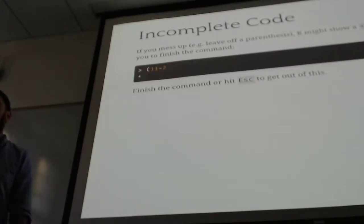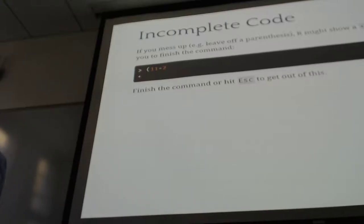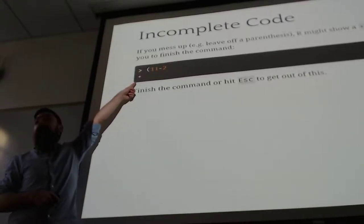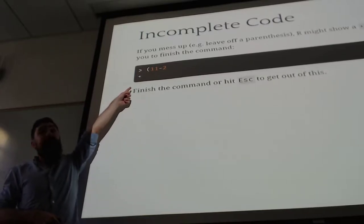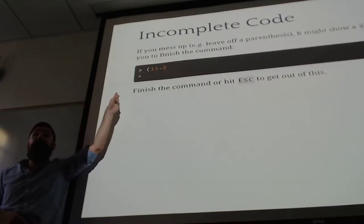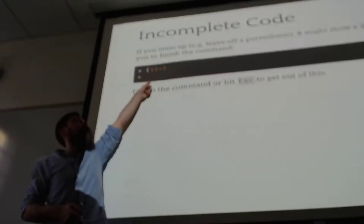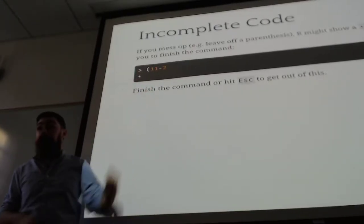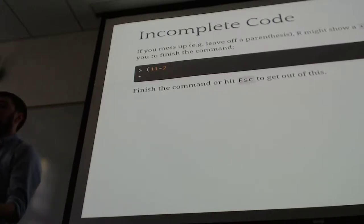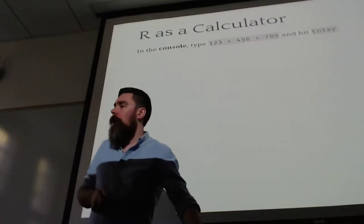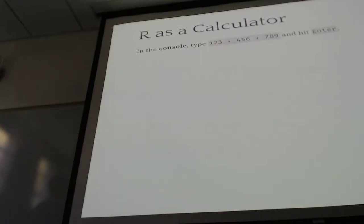Sometimes you'll mess up, most commonly by forgetting a closing parenthesis. R will show a plus sign in the console, meaning it assumes you're not done typing and is waiting for you to finish. If you have a plus and don't know why, hit Escape to cancel. Otherwise, type the closing parenthesis and hit Enter — it will finish and return the result. This plus is just saying 'you're not done; please finish it off.' R can also function as a calculator, which is actually what I use instead of my system calculator.